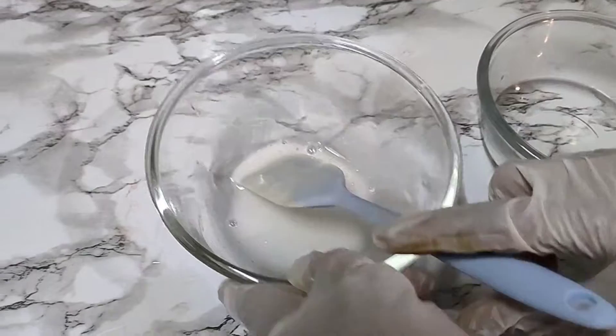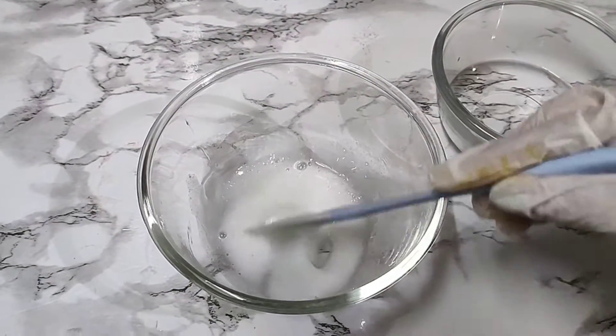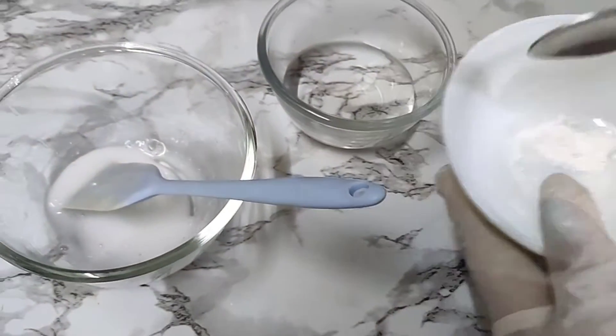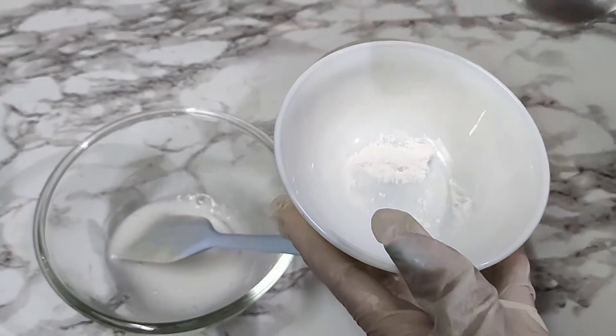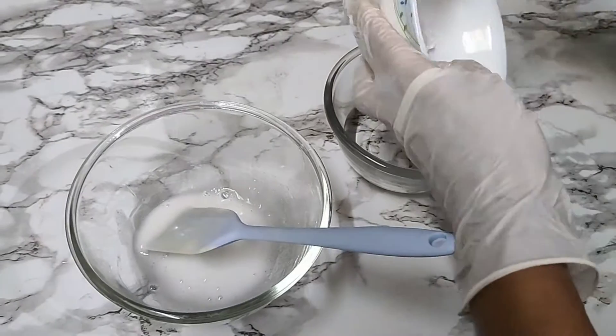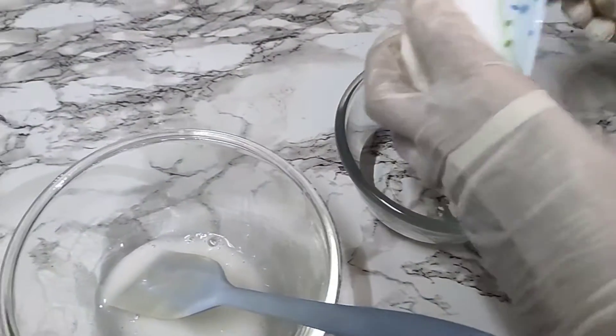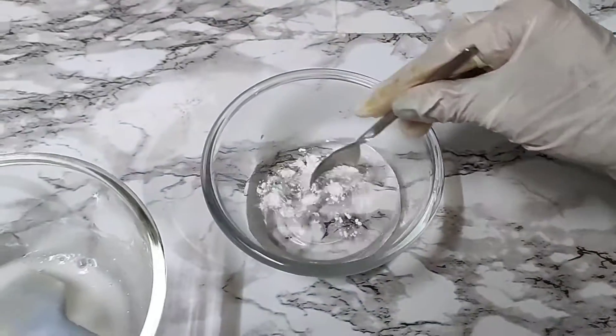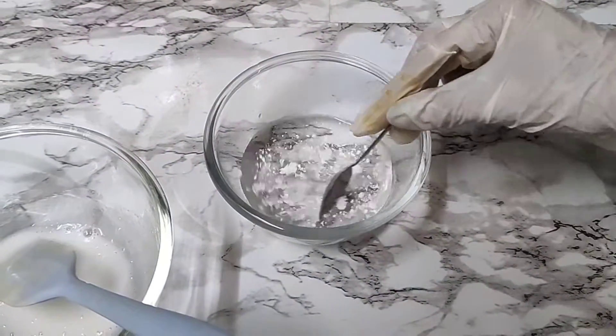Okay, so here we have gone ahead and melted down our SCI powder and this is how the solution looks like. Now since this is a salicylic acid face wash, I have taken my salicylic acid powder here which I will go ahead and dissolve in the water. I will just add it to my water and give it a mix.